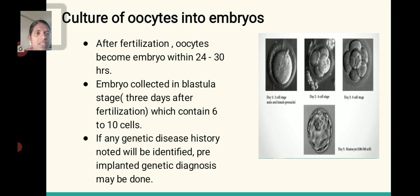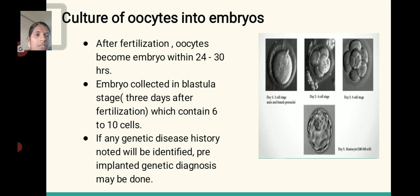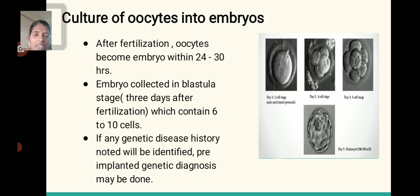Culture of oocytes to embryo: After fertilization, the oocyte becomes an embryo within 24 to 30 hours. Embryos are collected at the blastula stage, which is 3 days after fertilization and contains 6 to 10 cells. If there is a genetic disease history, pre-implantation genetic diagnosis may be done.